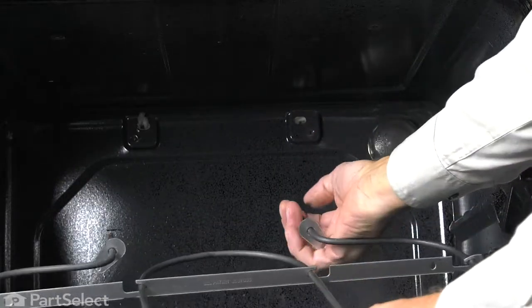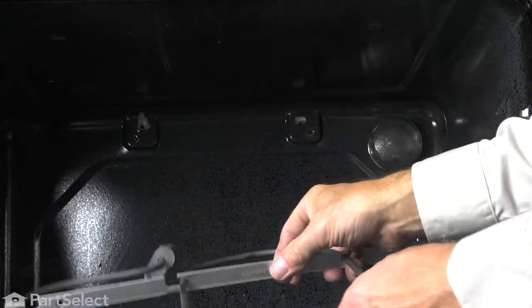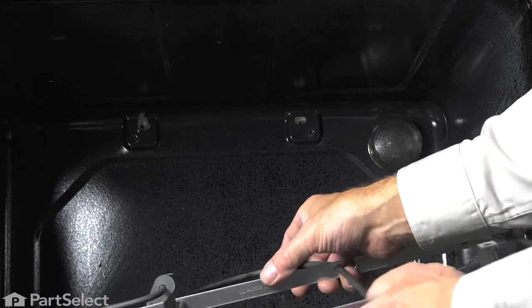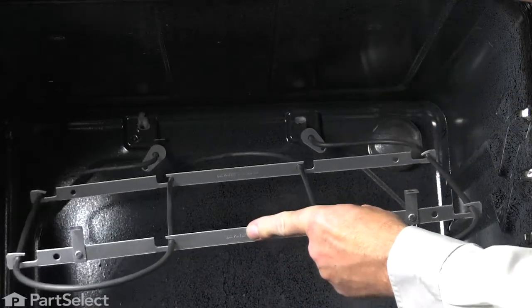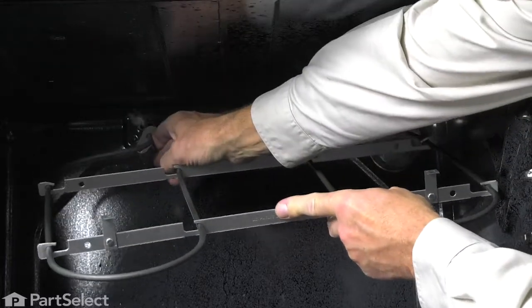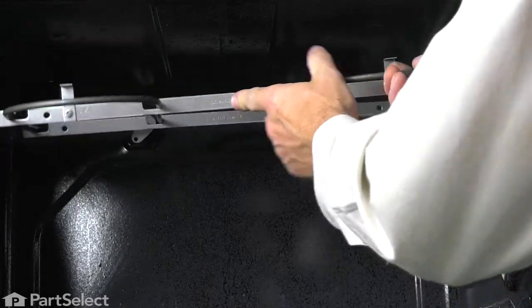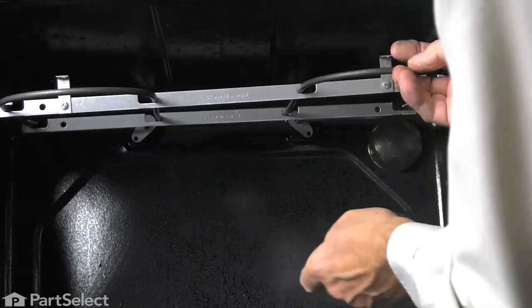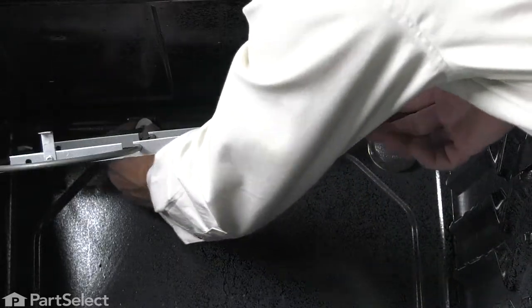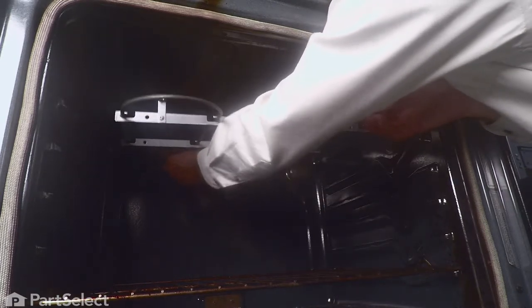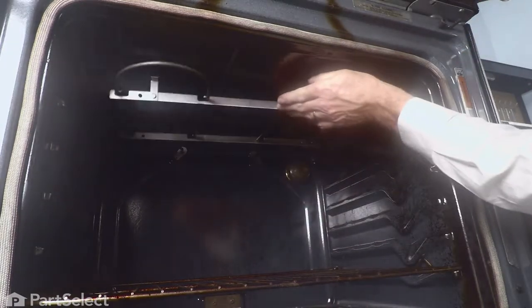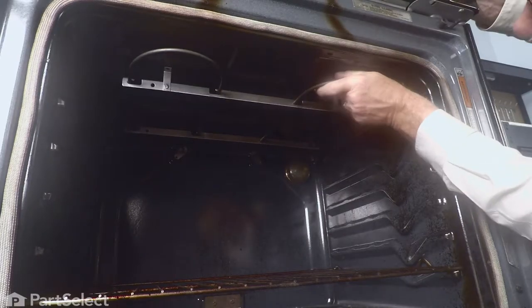Now, before we install the new one, we want to make sure that the terminals are not bent. Then we'll line up with the opening in the rear. I'm going to push them completely through. If you meet with some resistance, the insulation may need to go to the back of the range. Just straighten that out.